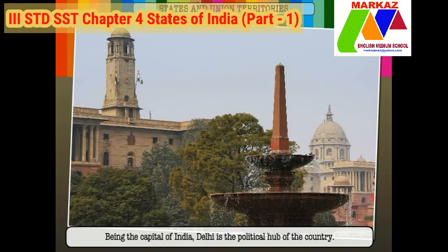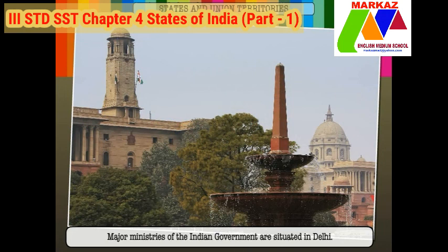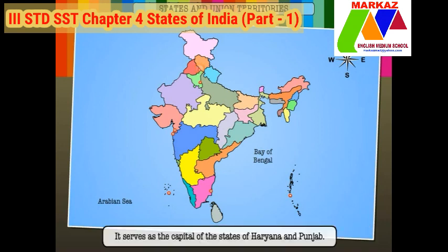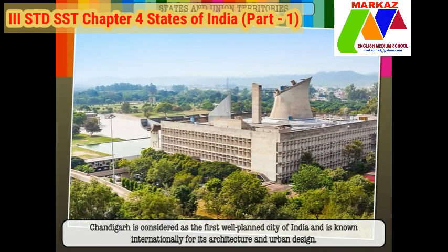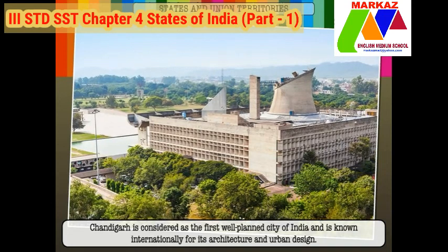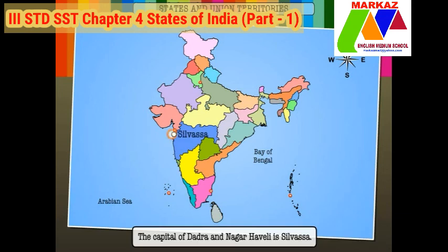Being the capital of India, Delhi is the political hub of the country. Major ministries of the Indian government are situated in Delhi. Chandigarh, nicknamed the City Beautiful, is located at the foothills of the Shivalik Hills. It serves as the capital of the states of Haryana and Punjab. It is considered the first well-planned city of India and is known internationally for its architecture and urban design. Dadra and Nagar Haveli is located between Maharashtra and Gujarat; its capital is Silvassa.